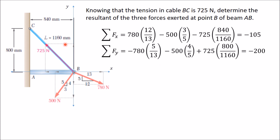The 725 Newton y-component is positive, so we write +725 × sin θ. From its right-angle triangle, sin θ = opposite/hypotenuse = 800/1160. Calculating sigma Fy from all three y-components gives −200 Newton. So sigma Fx = −105 Newton and sigma Fy = −200 Newton.